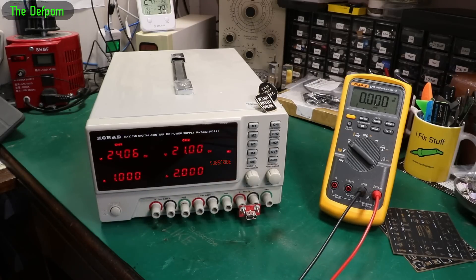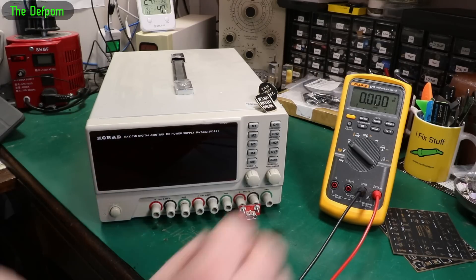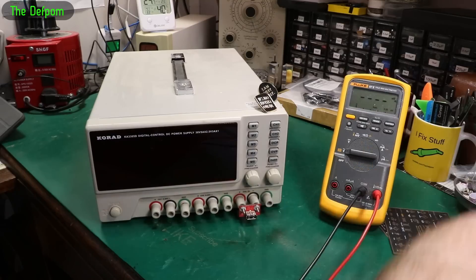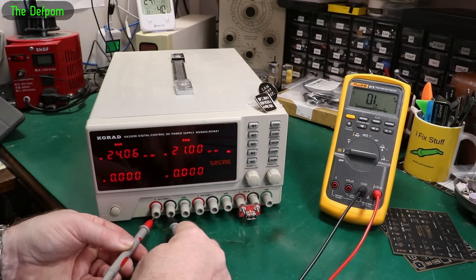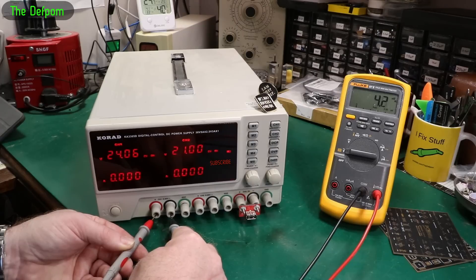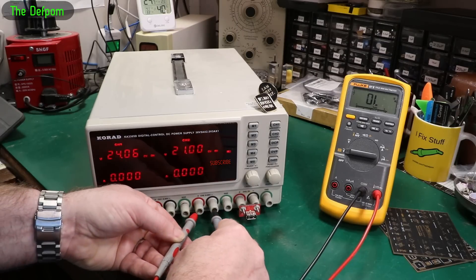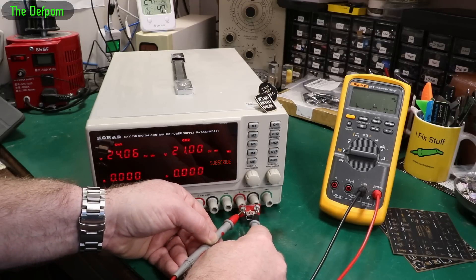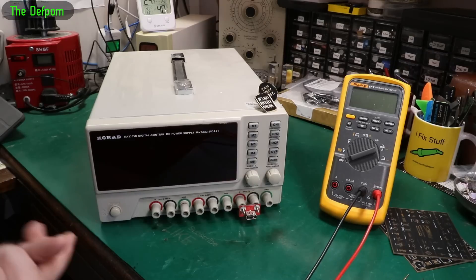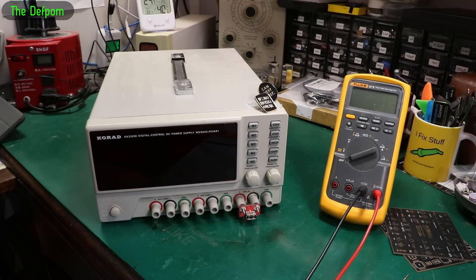I definitely heard something and smelled something. So I think I need to actually investigate that even though it seems to be working. Actually, let's check AC. Let's see if we've got any AC ripple coming out of it. I think this is a linear supply, so we should be able to see anything there. That's basically nothing there. What caused it? I don't know. Let's pull it apart and find out.